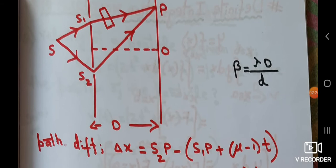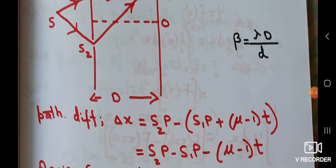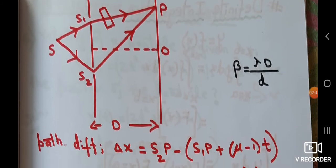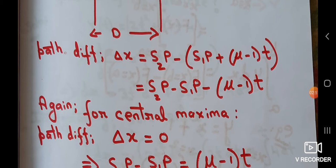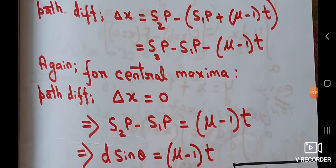Now let's apply this concept to the Young's Double Slit Experiment, where two light waves come from two coherent sources s1 and s2. We have placed the glass slab on the first interfering beam as shown in the diagram. The path difference delta x becomes s2p − s1p plus the extra optical path difference, which is (mu − 1)·t. So delta x = s2p − s1p − (mu − 1)·t. For the central maximum, the condition is delta x = 0.